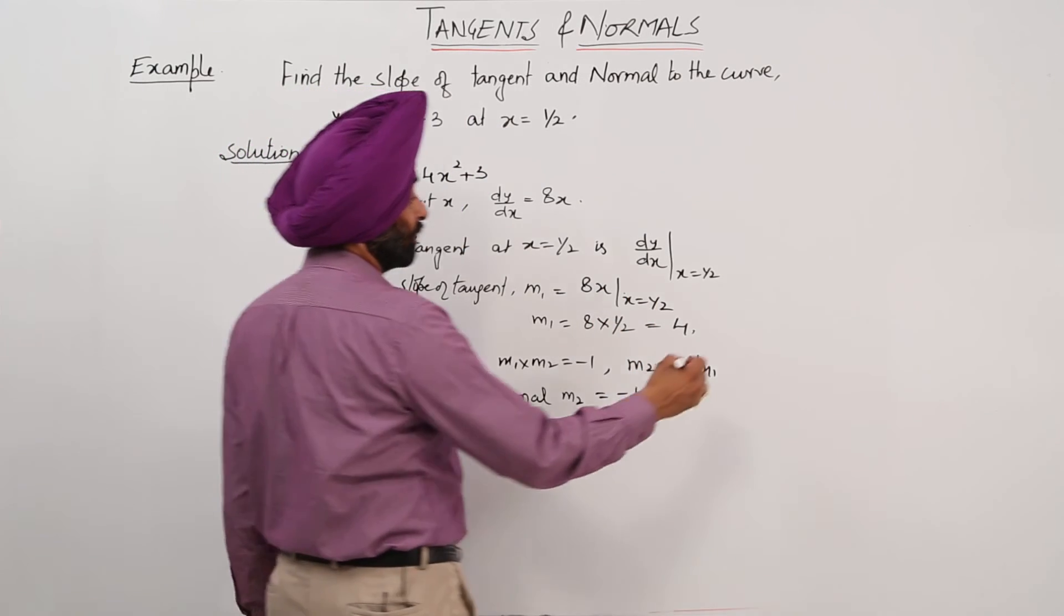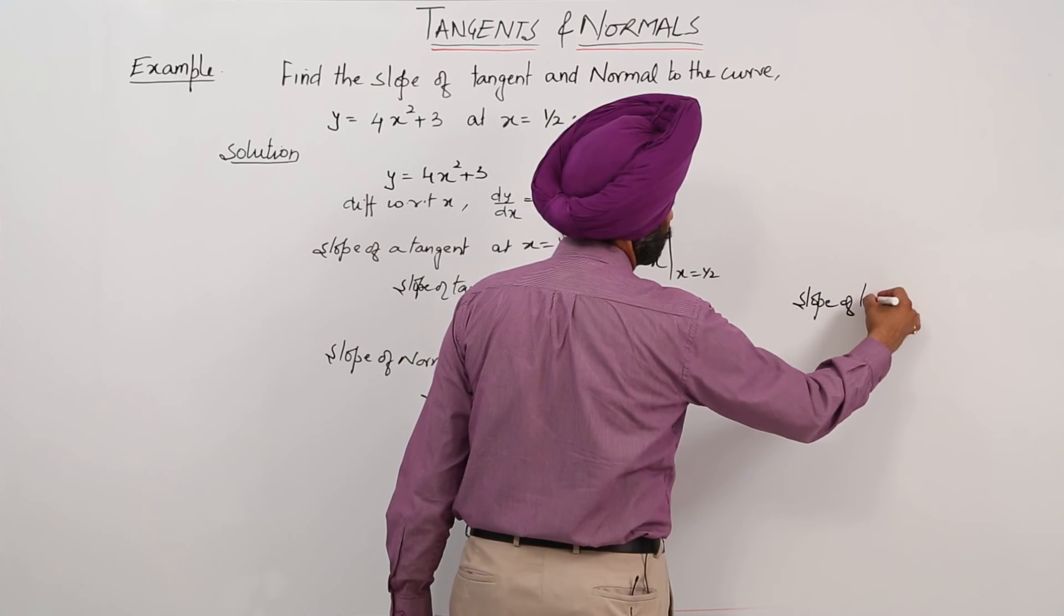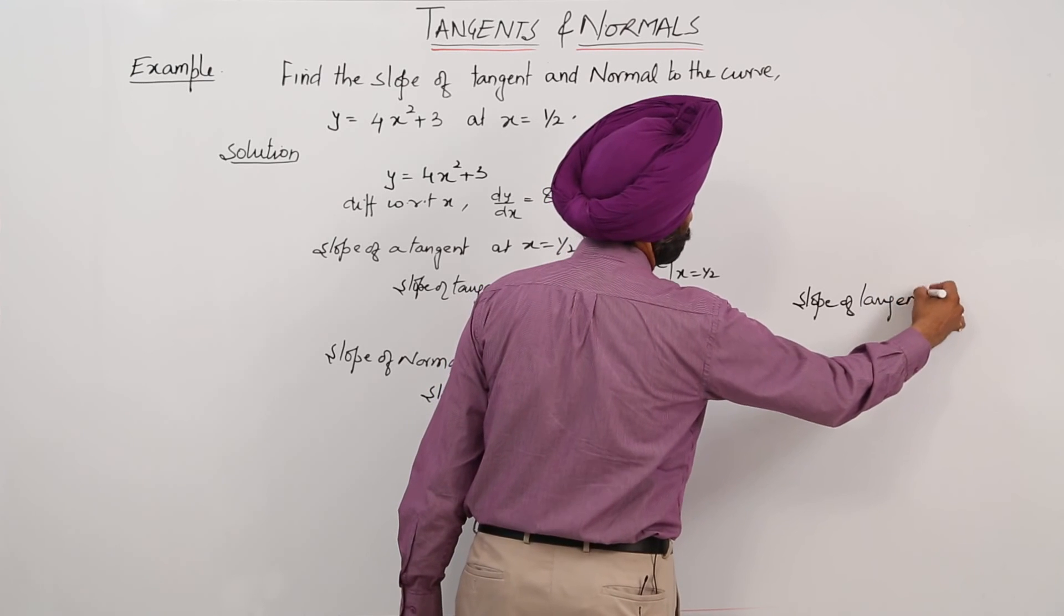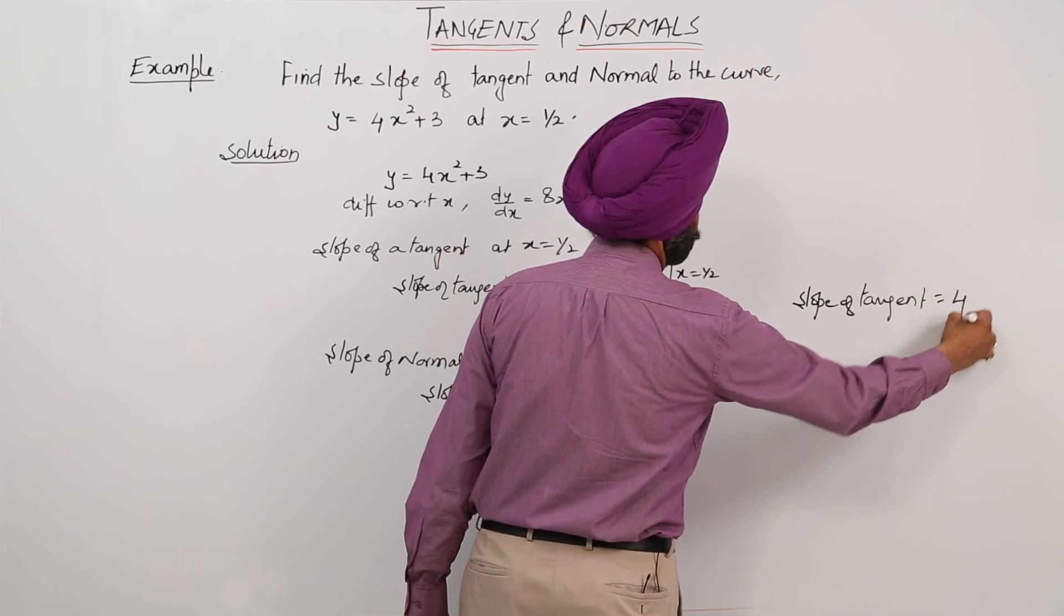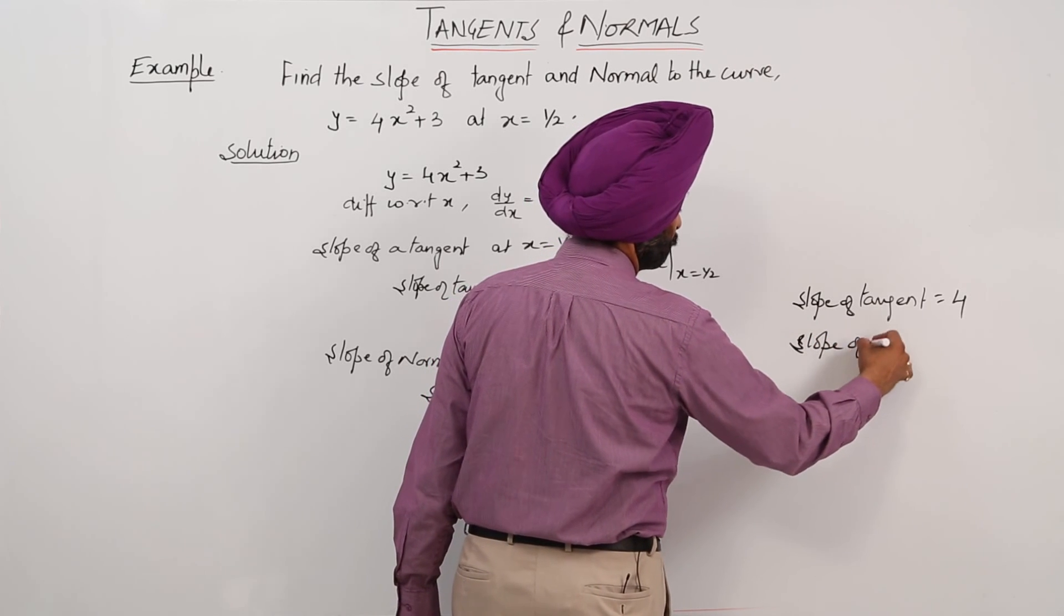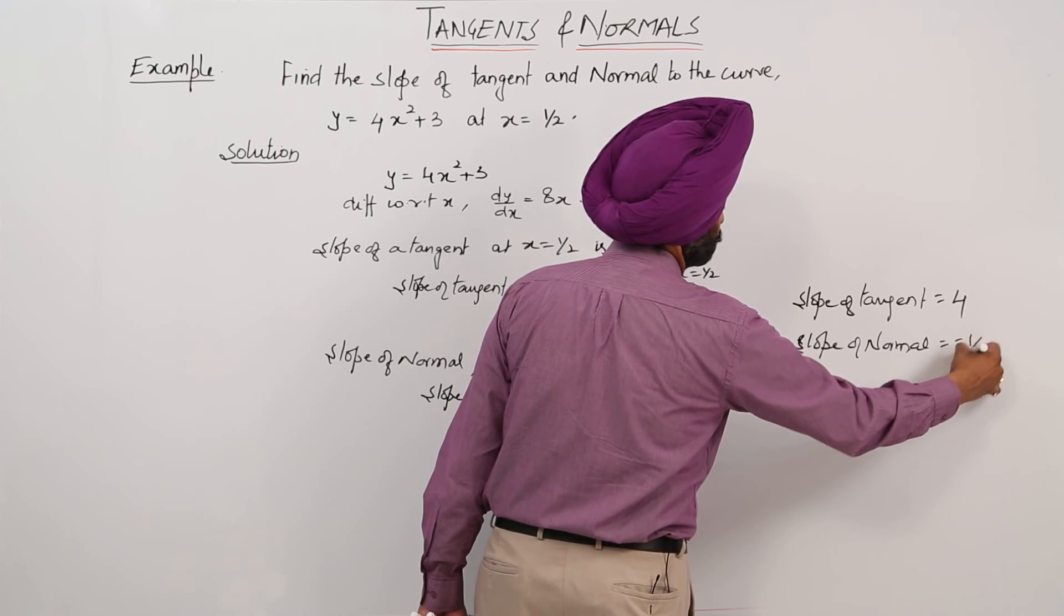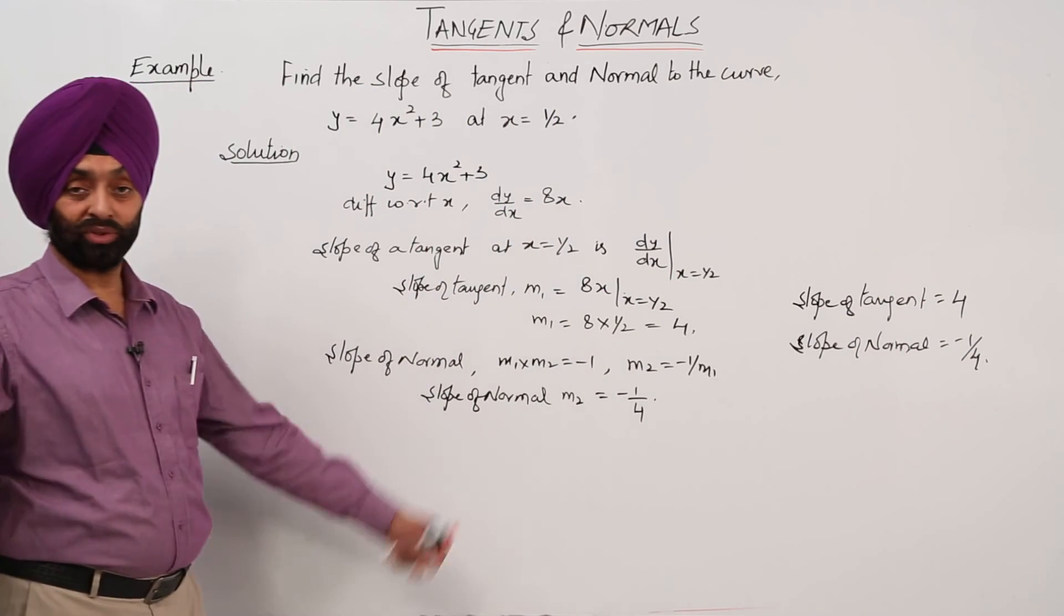So we have now slope of tangent equals 4 and slope of normal equals minus 1 by 4. Simple question.